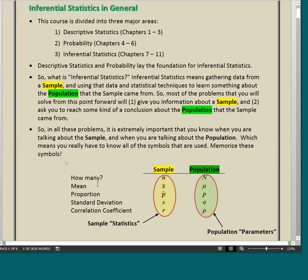Now I want you to notice, when we talk about mean, we can have a mean of a sample and we can have a mean of a population. We can have a proportion of a sample and a proportion of a population, and so on. All of these things can come up in the context of a sample, and they can come up in the context of a population.